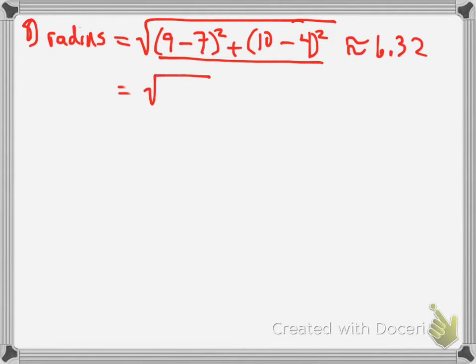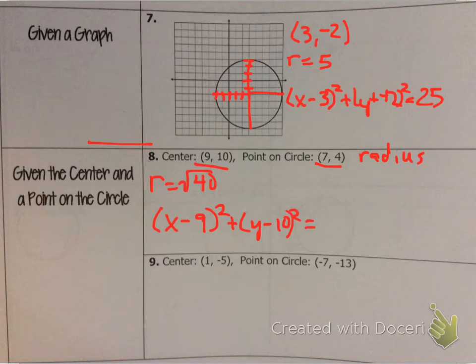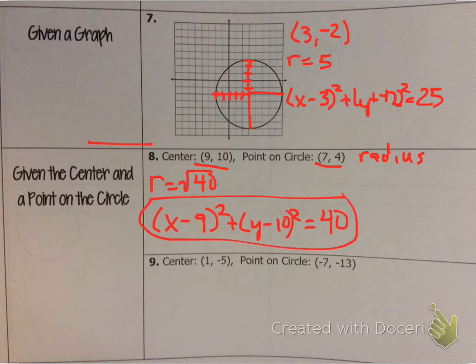So my x coordinates are 9 and 7, if you look back at your number 8, and my y coordinates are 10 and 4. If I type that into the calculator, and again, you can type all of that in right there, all at once into the calculator, and you should get something like 6.32. But if you want to be more accurate, just do this part. The 9 minus 7 squared plus the 10 minus 4 squared. And what you would do is you would get that answer would go under a square root symbol, which in this case would be 40.